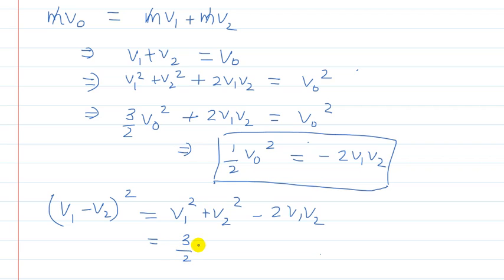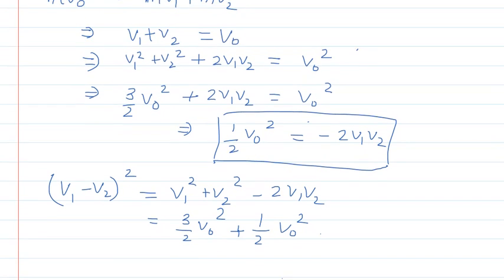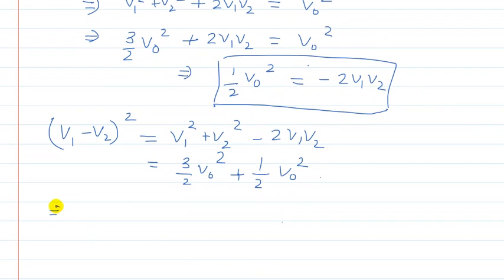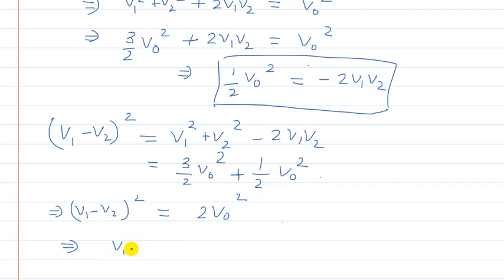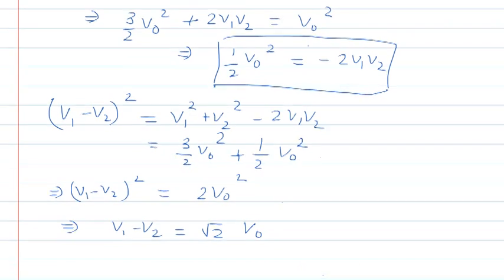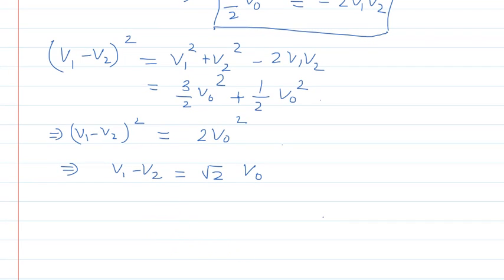Now we can see: V1 minus V2 whole square equals 3/2 V0 squared minus 2 V1 V2, which equals 3/2 V0 squared plus 1/2 V0 squared, giving 2 V0 squared. Taking the square root on both sides, V1 minus V2 equals root 2 times V0. So the relative velocity magnitude is root 2 V0.